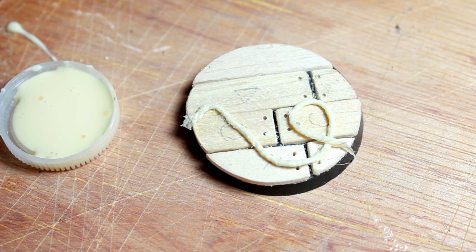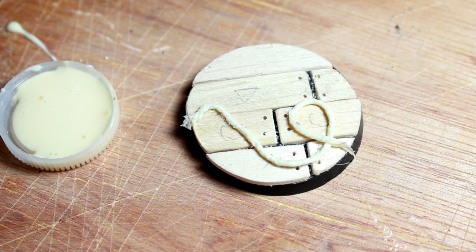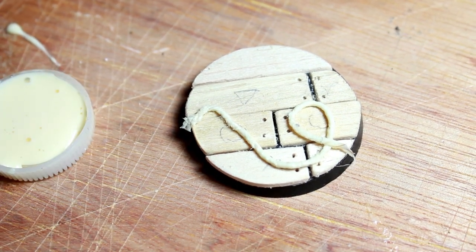And then if you're worried that you don't have a good adherence, you can always go back and add a little bit more watered down wood glue to help keep it in place.